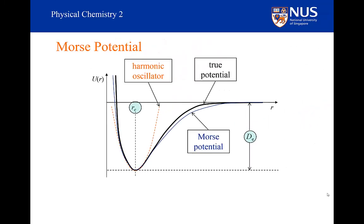A Morse potential does have the right kind of shape, but it won't perfectly match the true potential — it doesn't have all the theory that underpins the true potential. In general, it is not quite as steep as the true potential as the nuclei get closer and closer together, and at larger internuclear separation it can go either way: it can come up steeper than the true potential, or sometimes it is shallower. Here I've drawn it as shallower than the true potential.